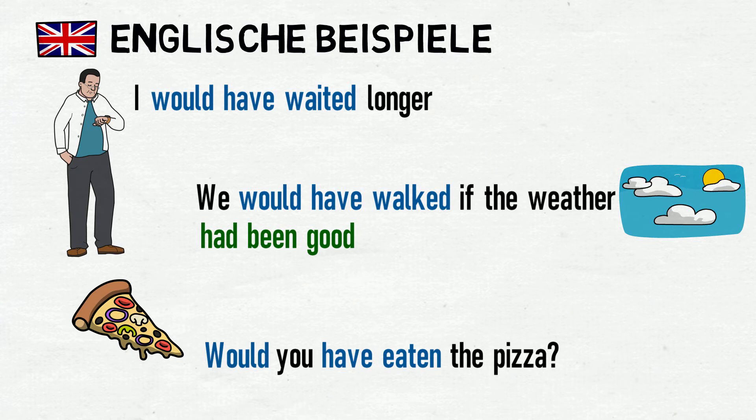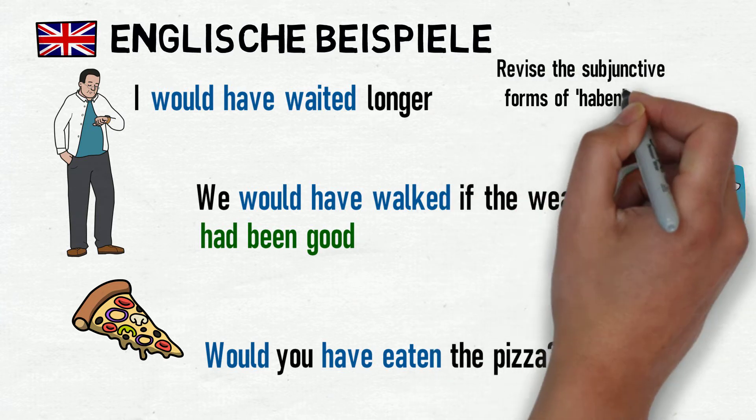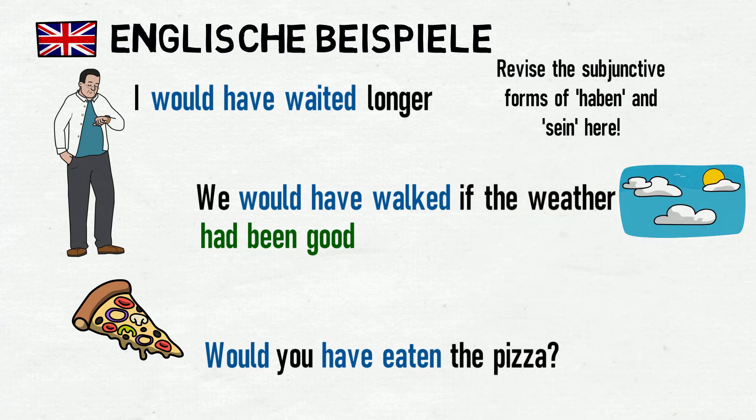If you're confident using the perfect tense, this tense should be extremely easy. All you need to know is how to form the subjunctive versions of the verbs haben and sein. And if you aren't aware of how to do this yet, please go back and watch that video by clicking the banner now.